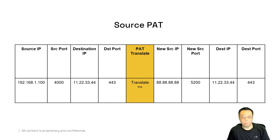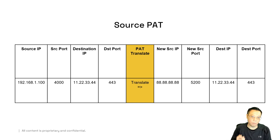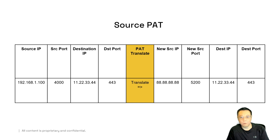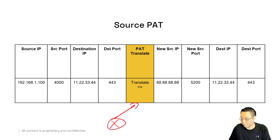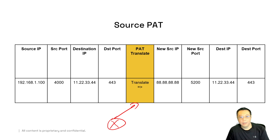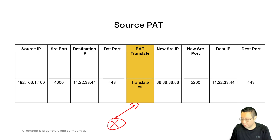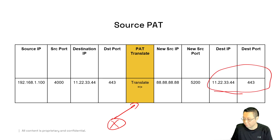With source PAT, just like a stateful firewall rule table, you have source IP, source port, destination IP, and destination port, and then the translation happens at your router or firewall. The new source IP comes from your public-facing IP — say 8.8.8.8 — it creates a new mapping with a new source port, and the final destination IP and port never change.